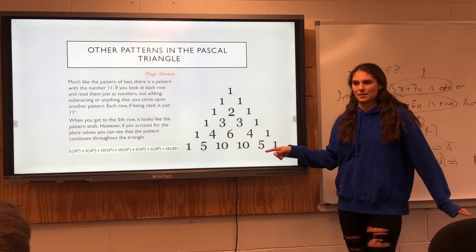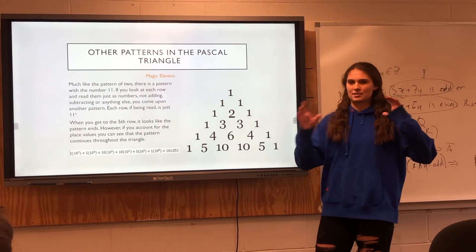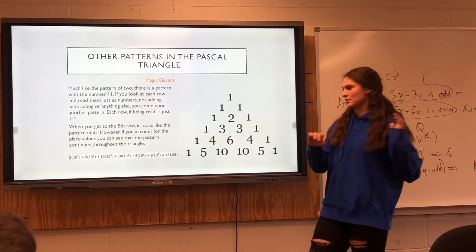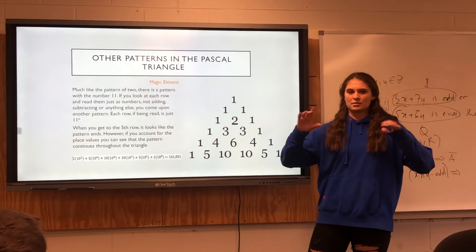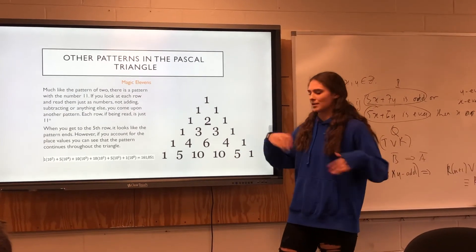And that's because they're not counting for the place values of it. If you account for the place values, you still get that. The triangle still continues on. It doesn't give up at the fifth row. Keep on going.